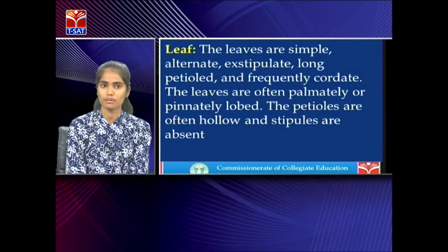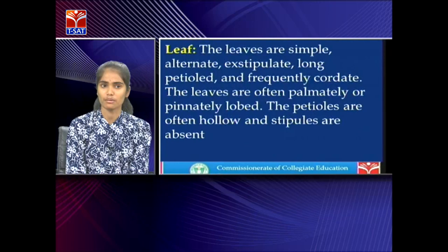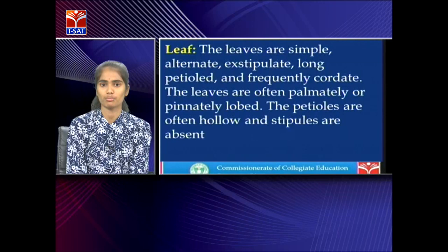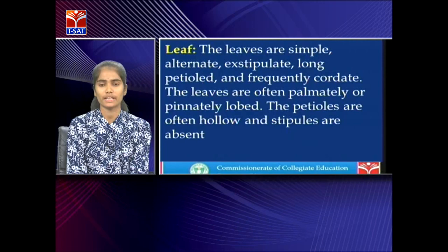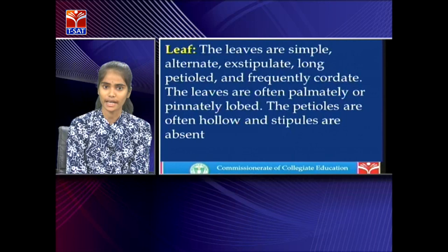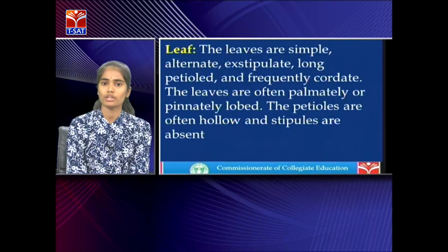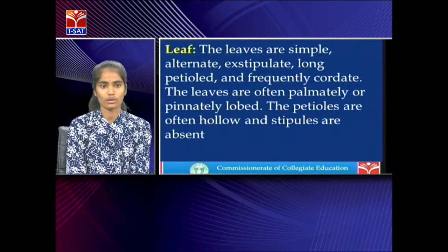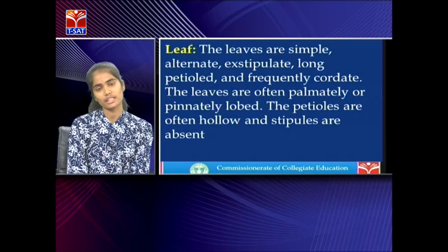The leaves of Cucurbitaceae are simple, alternate — arranged one on each node on the common axis — exstipulate (absence of stipules), with long petioles, and frequently cordate, meaning the leaf blade is heart-shaped. The leaves are often palmately or pinnately lobed; pinnately lobed means leaflets of more than three arise from a common axis, appearing like a fan when viewed. The petioles are hollow and stipules are absent.